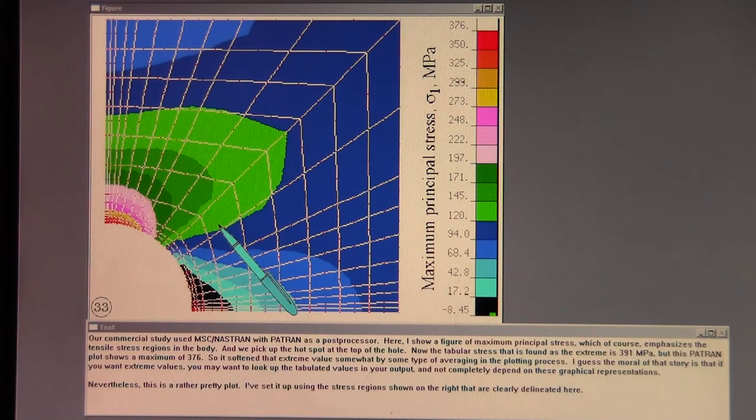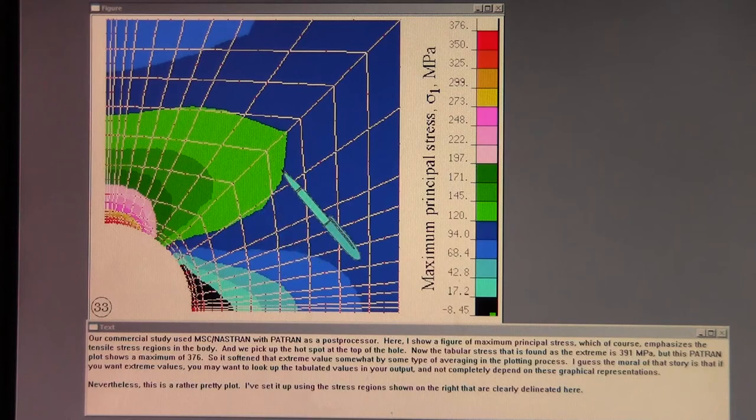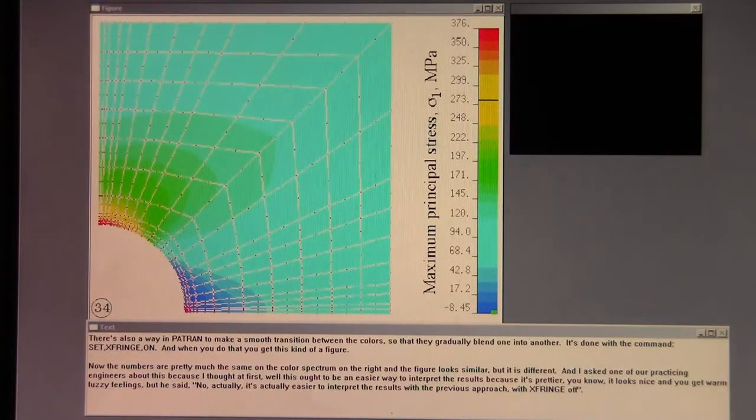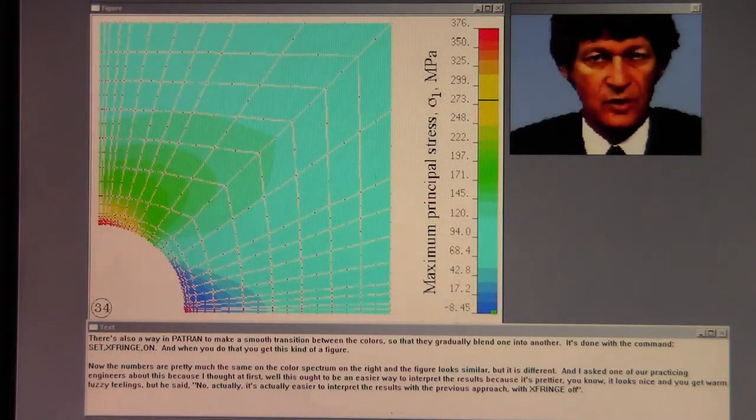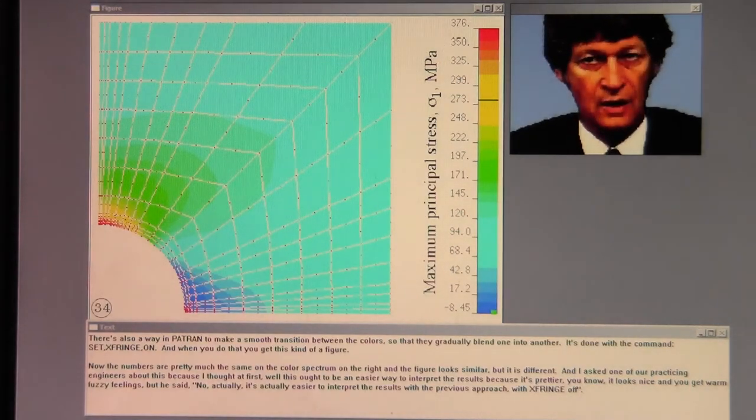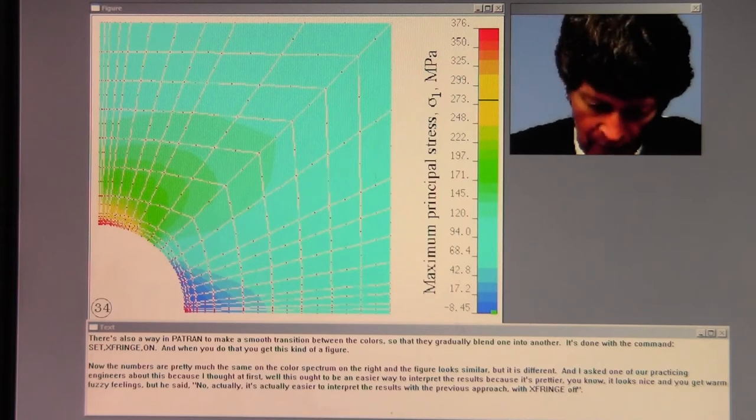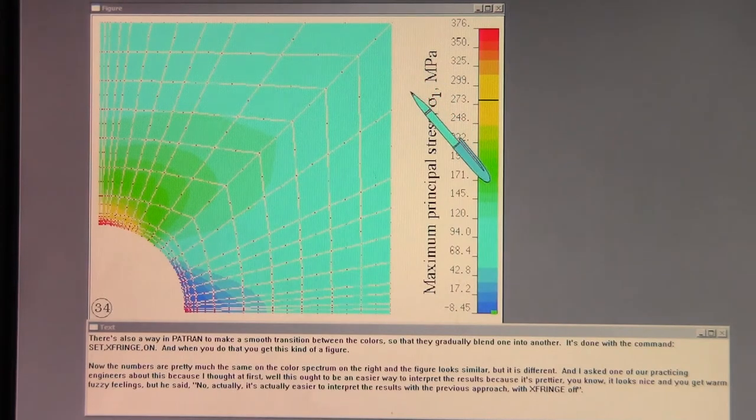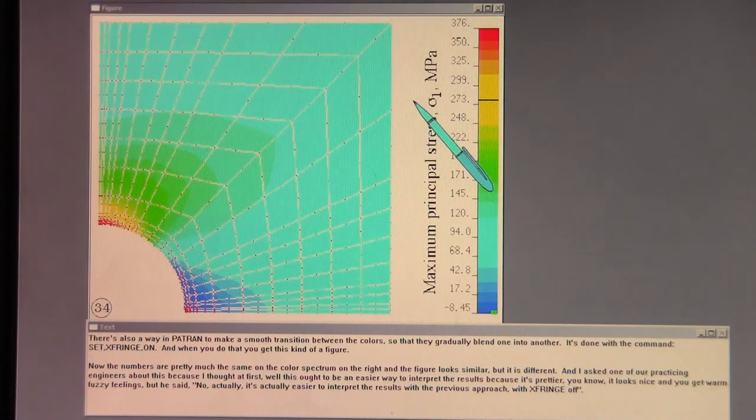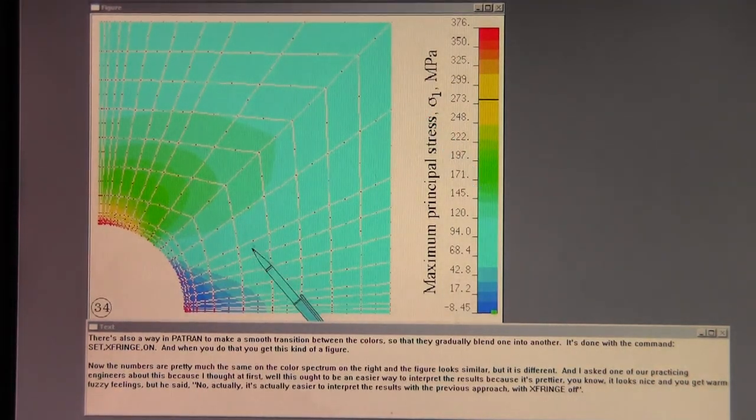Nevertheless, this is a rather pretty plot. I've set it up using the stress regions shown on the right that are clearly delineated here. There's also a way in Patran to make a smooth transition between the colors so that they gradually blend one into another. It's done with the command set comma x fringe comma on. And when you do that, you get this kind of a figure.